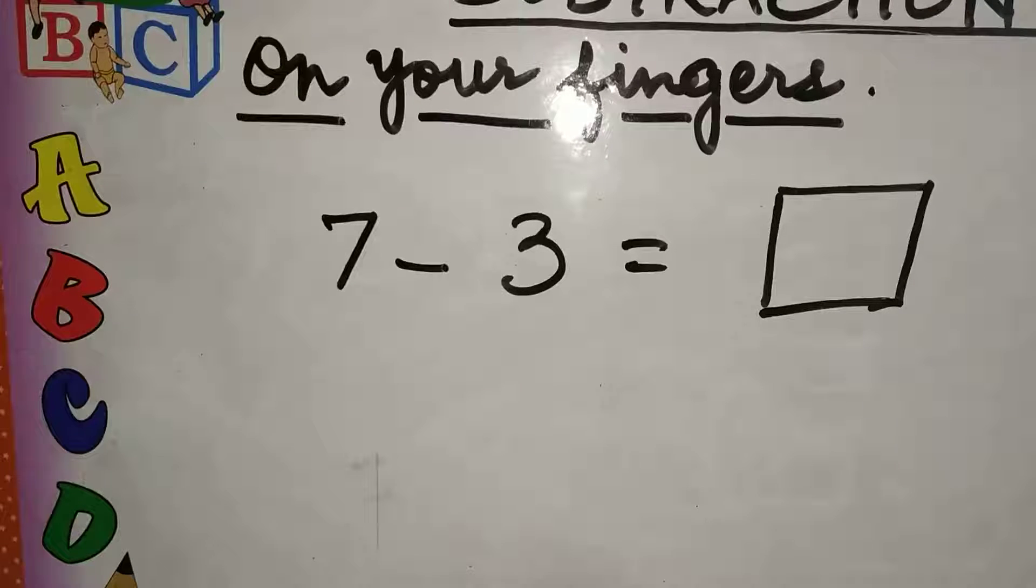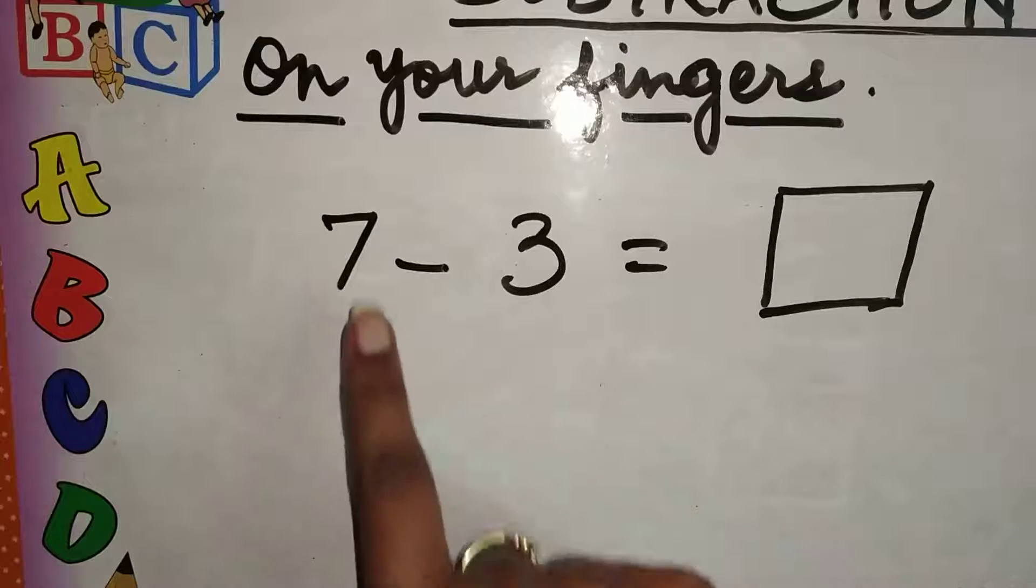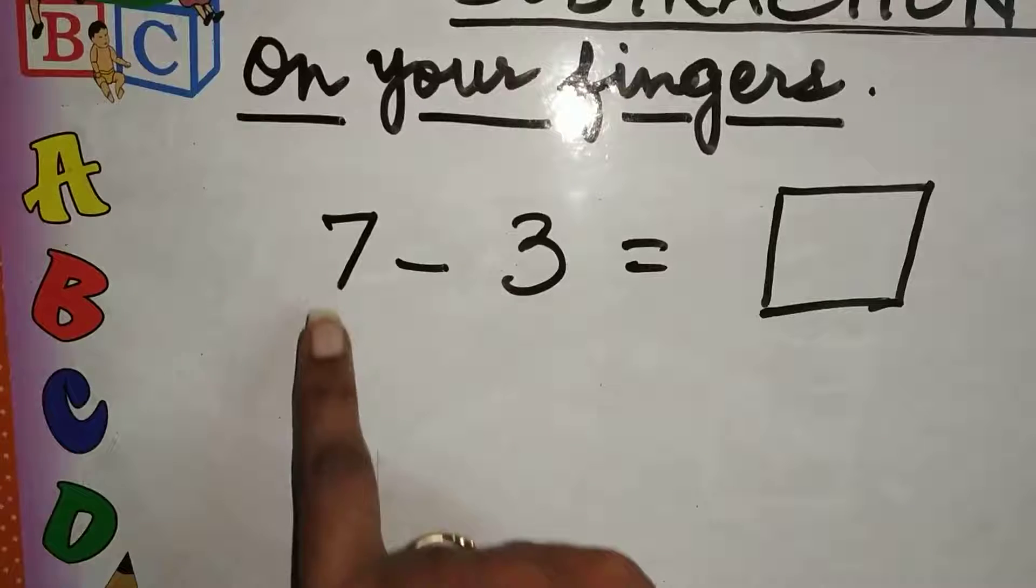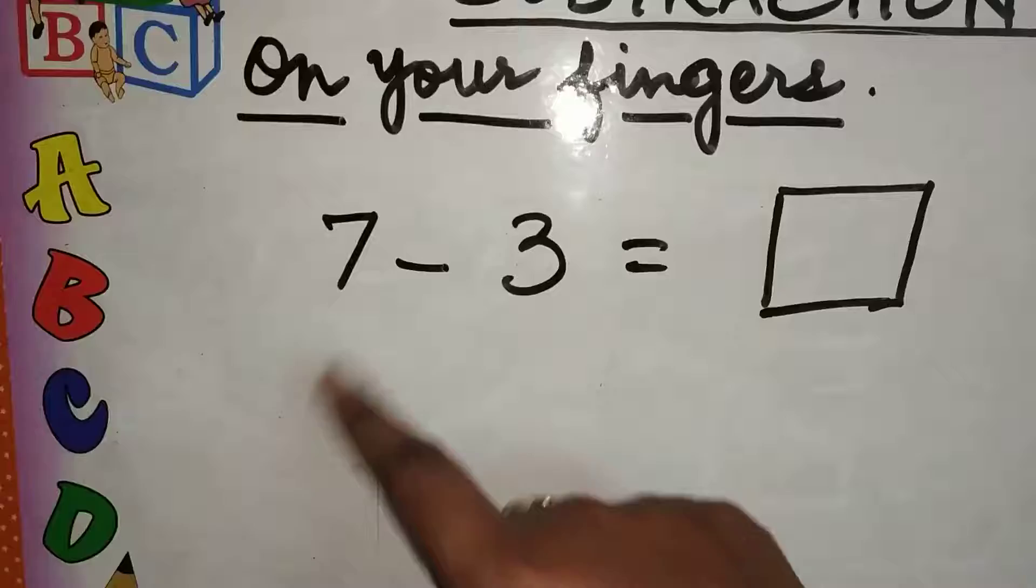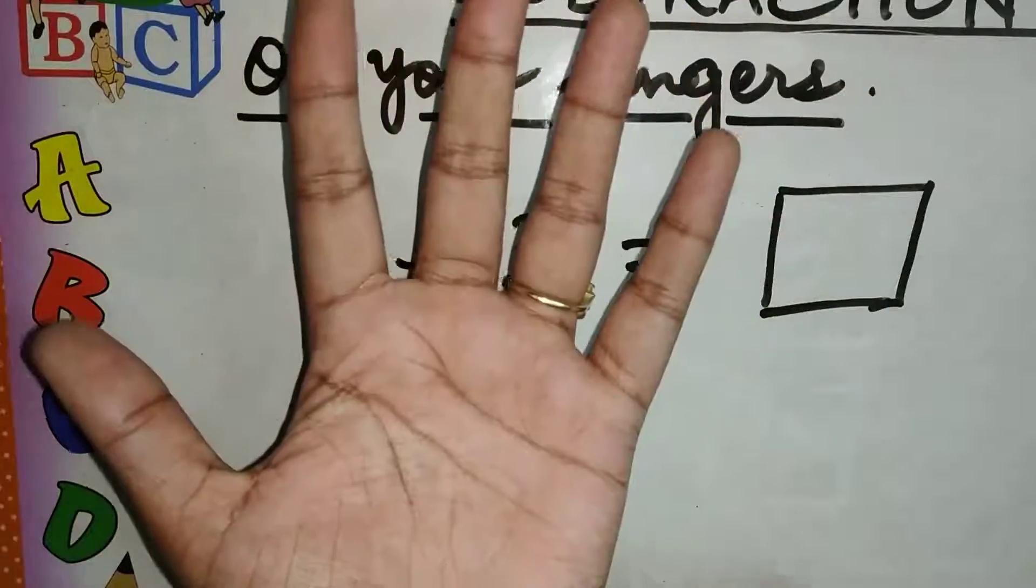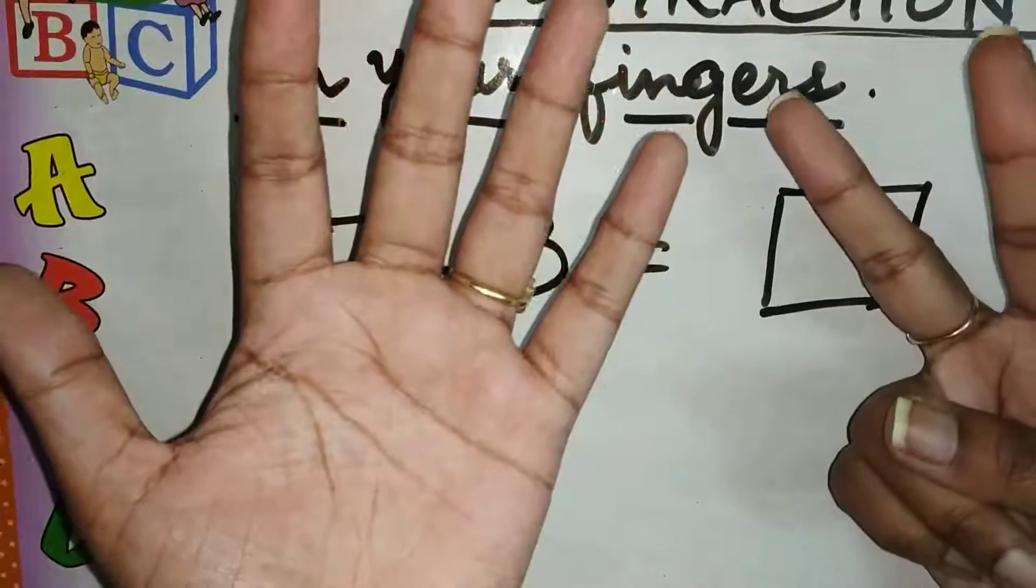Let me give you one more example. Now, it's written seven minus three. So, how many fingers you have to take out? Stretch seven fingers out. So, five, six and seven.